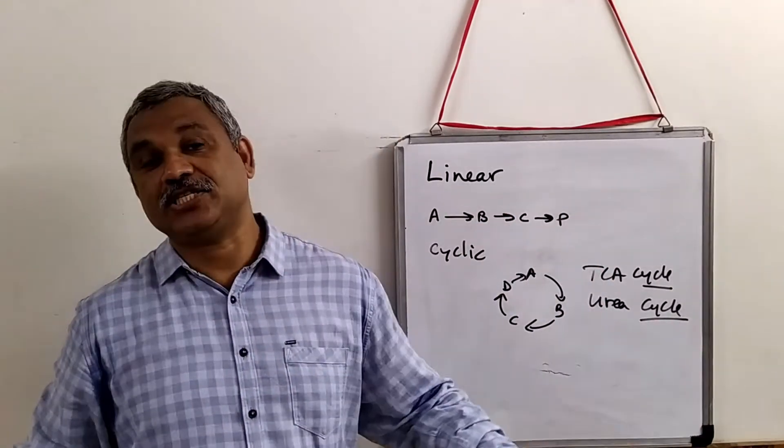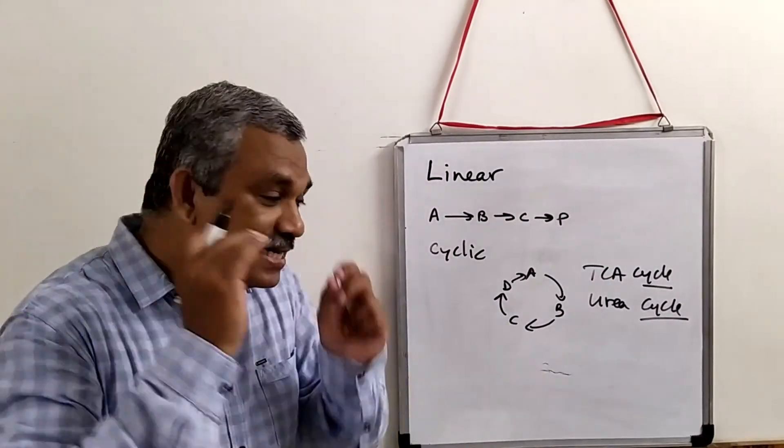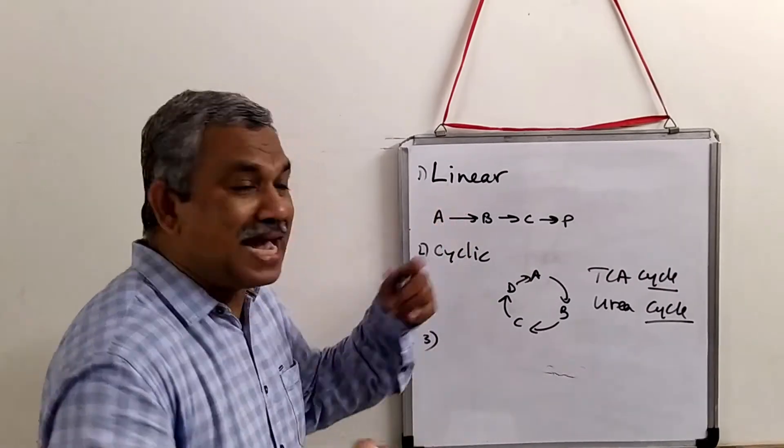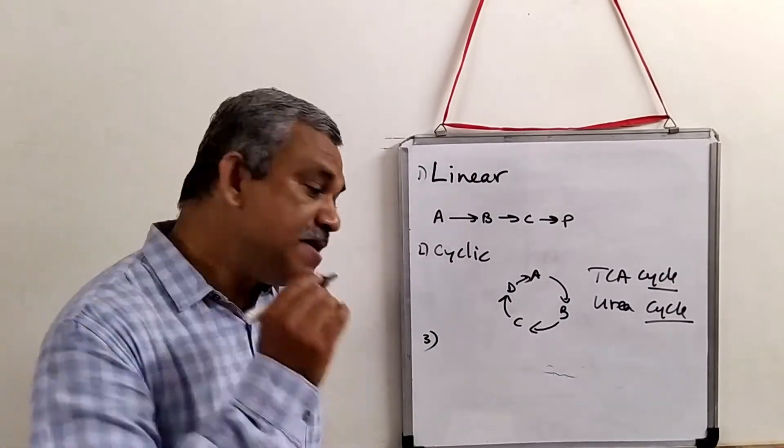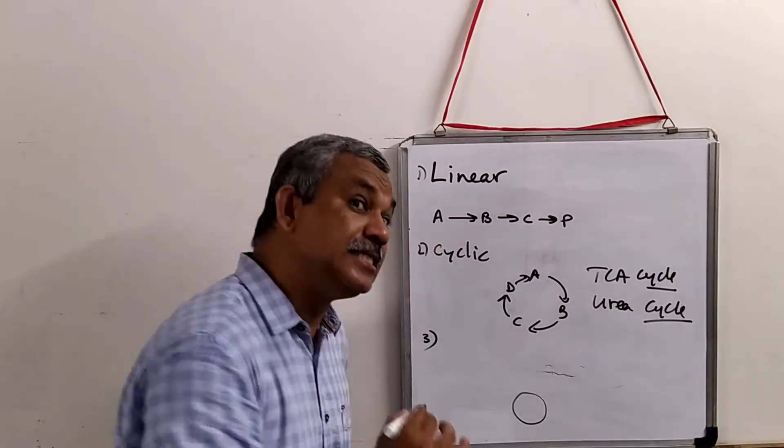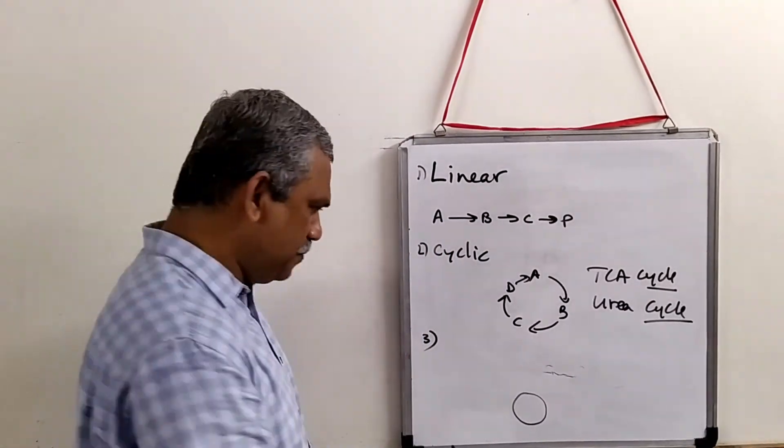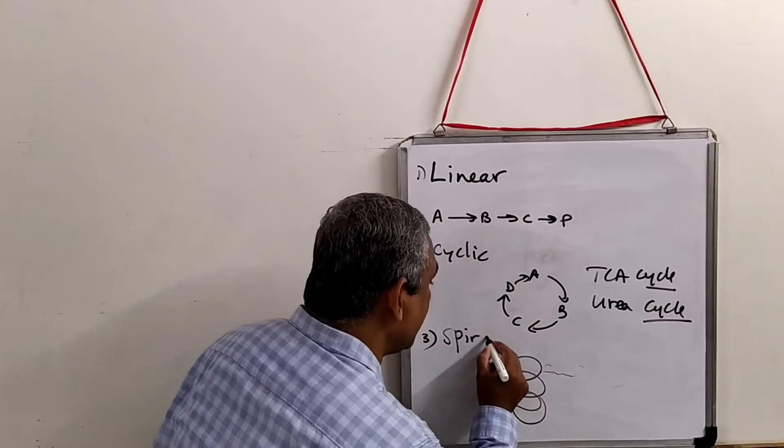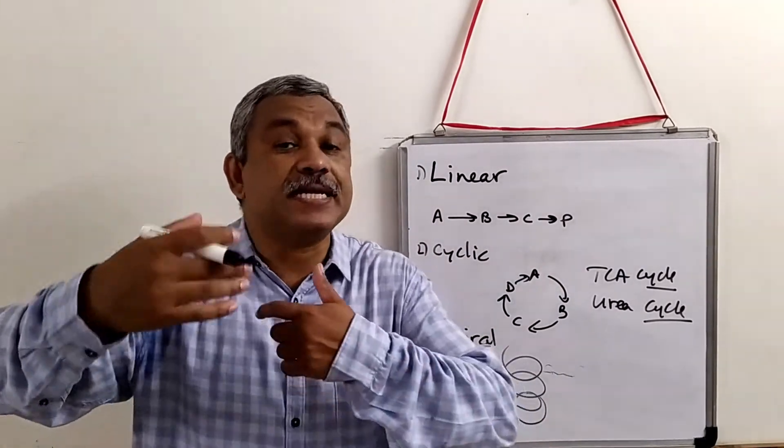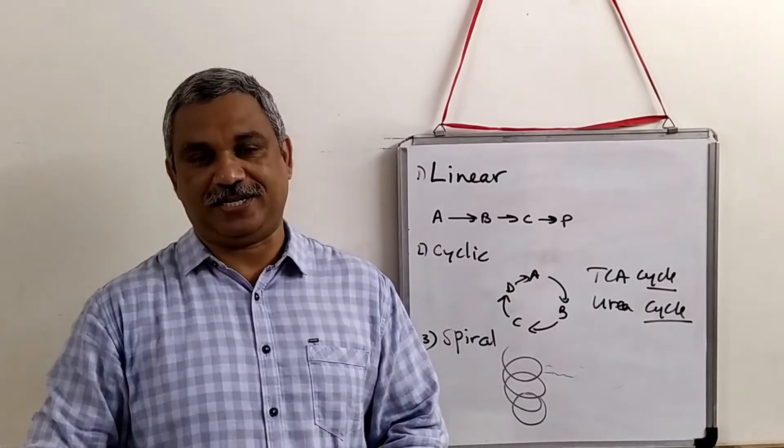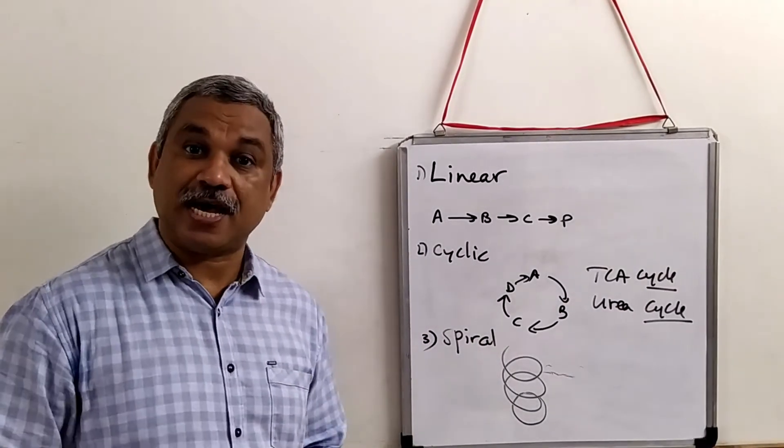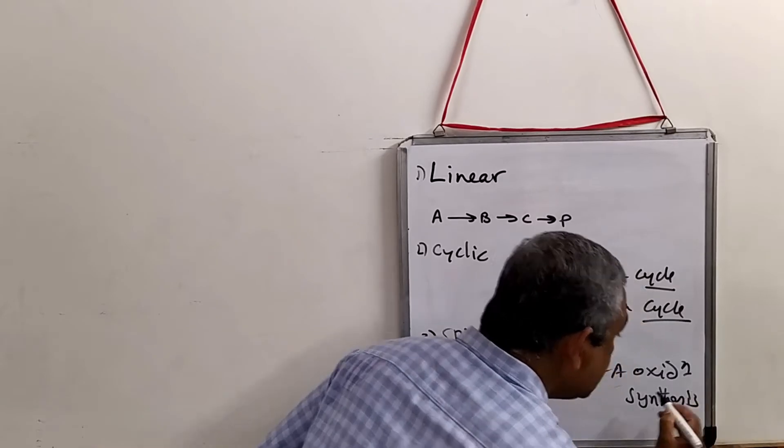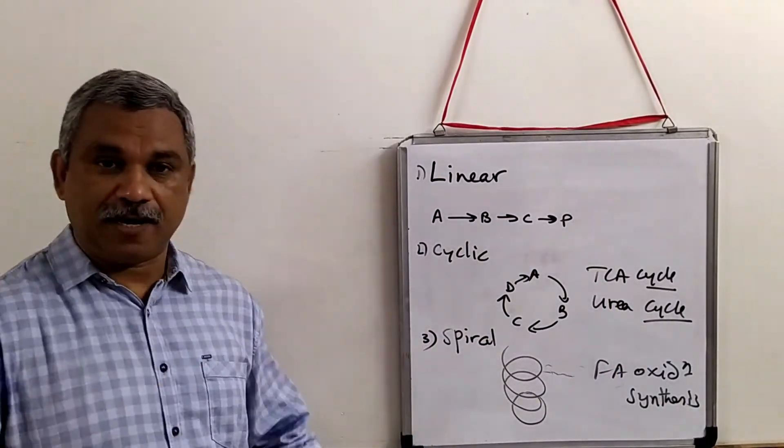The third kind of pathway is neither linear nor cyclic. In the same set of enzymes are used to achieve something, then that is being repeated again and again. This is called a spiral pathway. Same set of enzymes are repeatedly used in order to produce a product. Classic examples of spiral pathways are fatty acid oxidation and fatty acid synthesis.